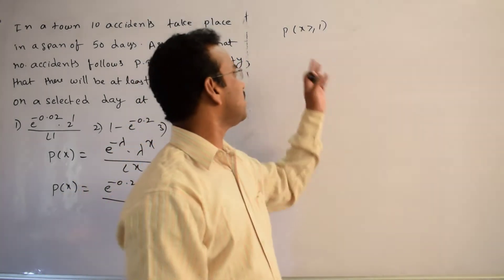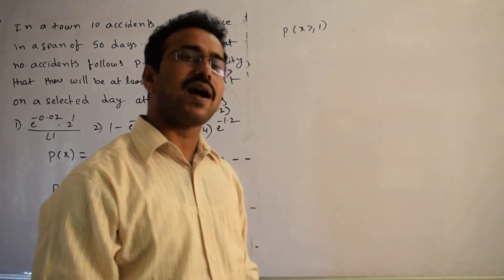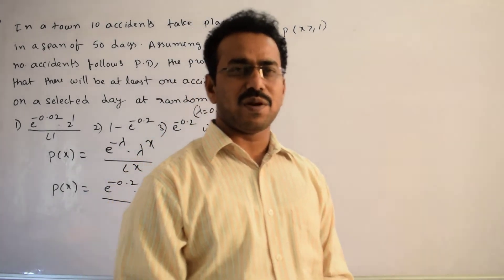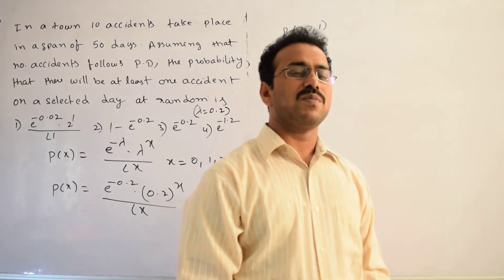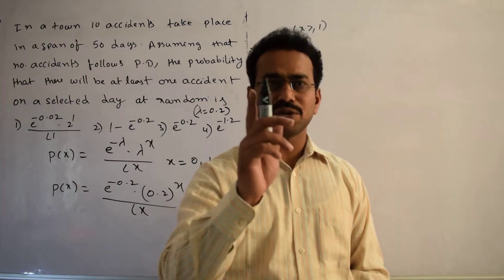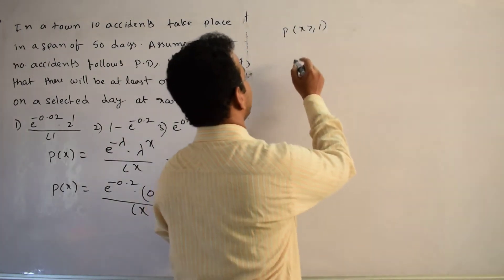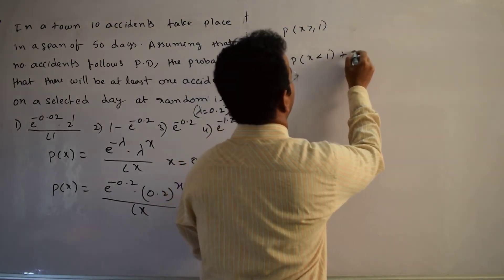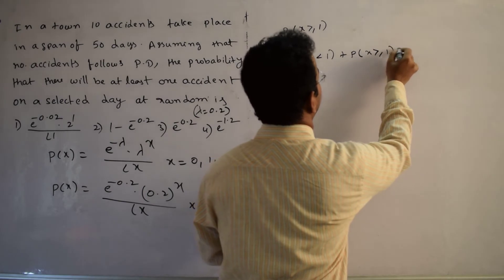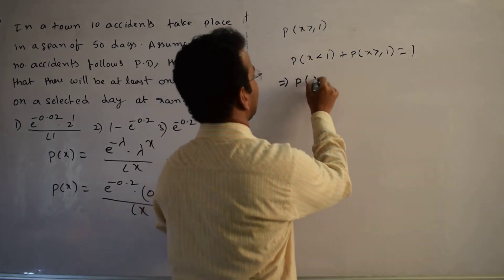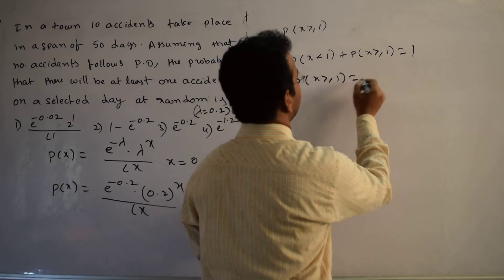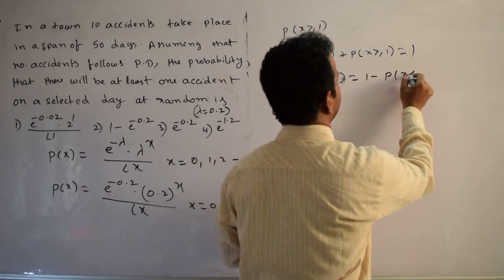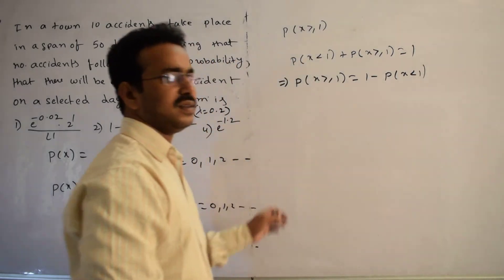Instead of writing that long expression, we think about an alternative. In probability theory, we use the rule: probability of an event plus probability of its complementary event equals 1. So, P(X < 1) + P(X ≥ 1) = 1, which means P(X ≥ 1) = 1 − P(X < 1).